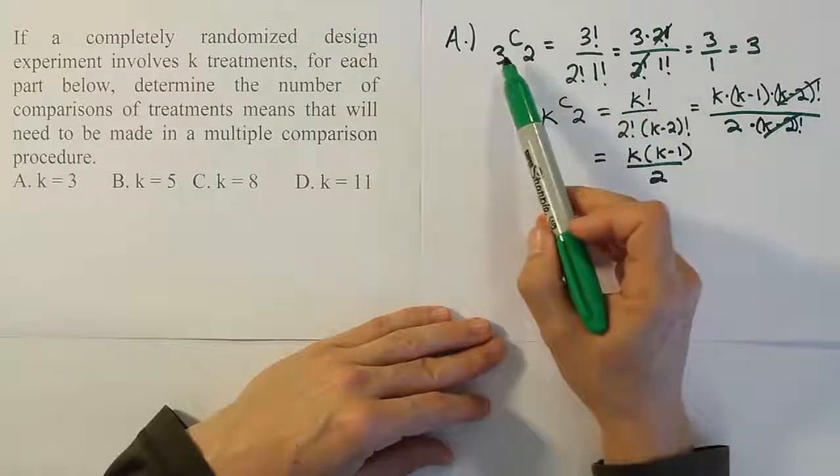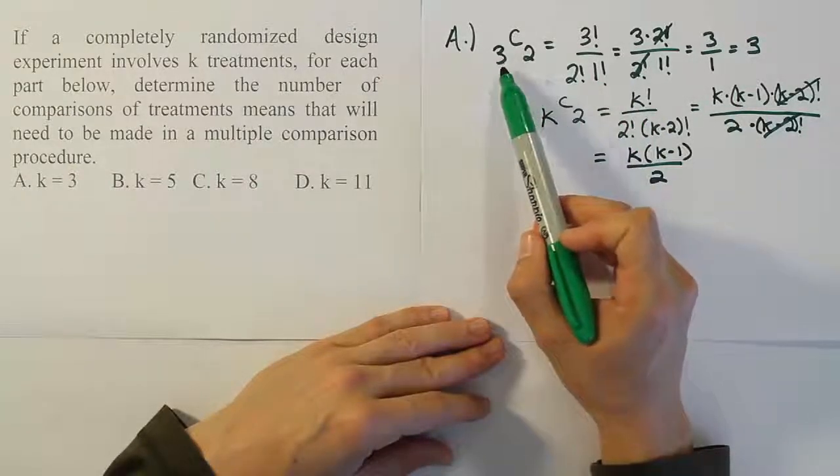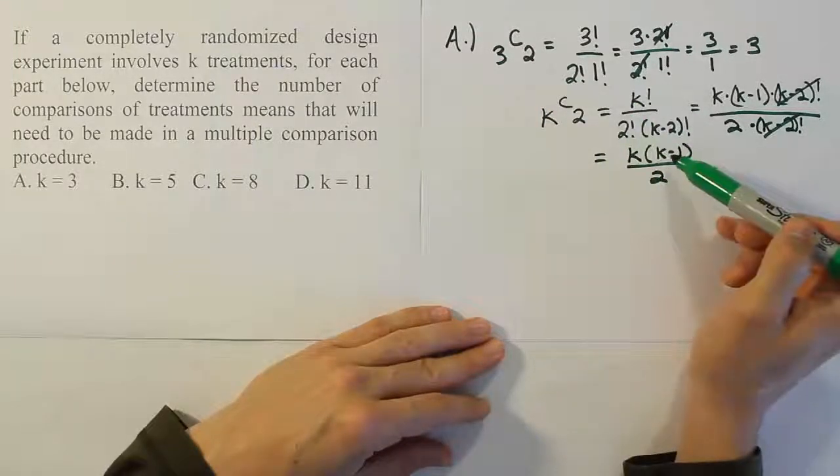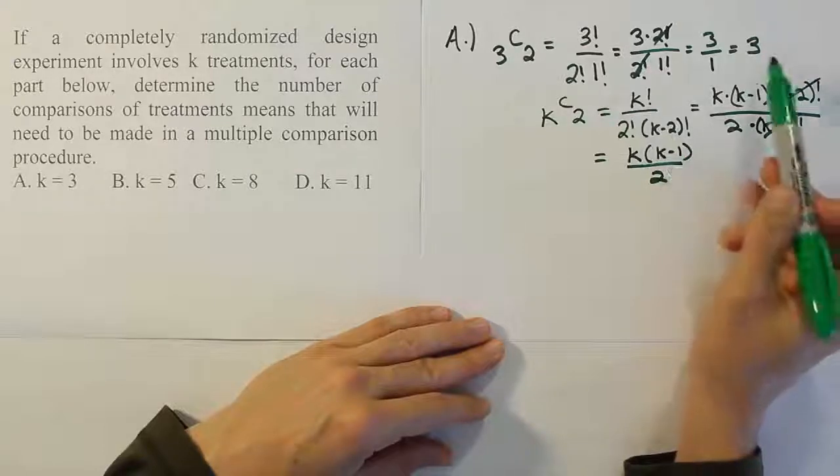For example, we could have done this by simply doing 3 times (3-1). So 3 times 2 gives you 6, divided by 2 gives you 3.